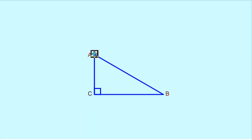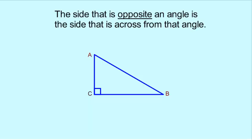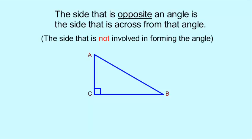For every angle, there is a side that is opposite that angle. Specifically, the side opposite an angle is the side that is across from that angle. Or another way of putting it, it's the side that is not involved in forming the angle.